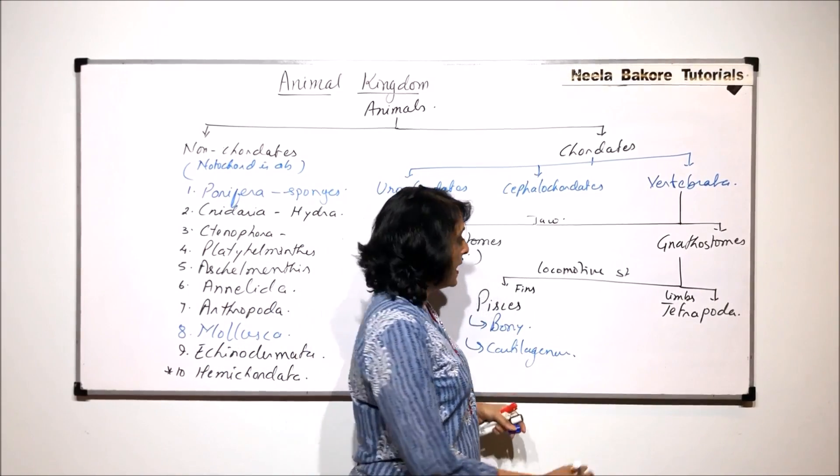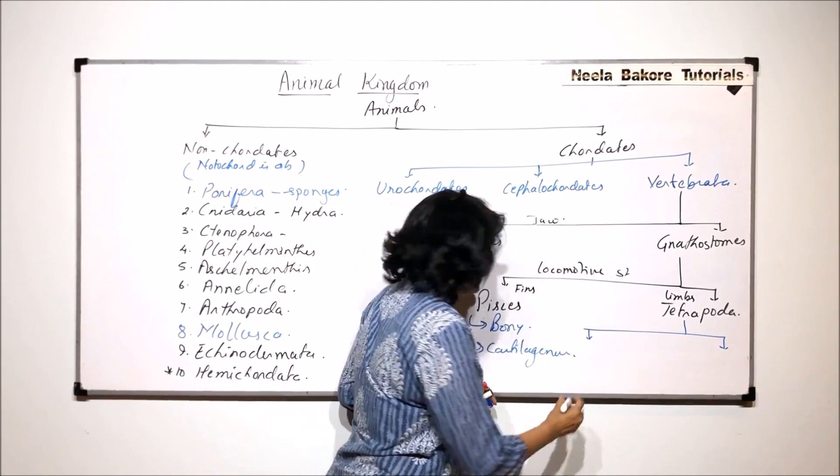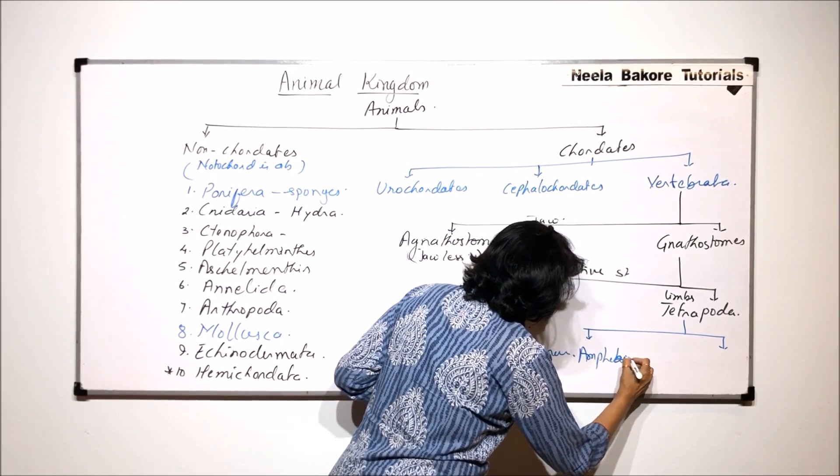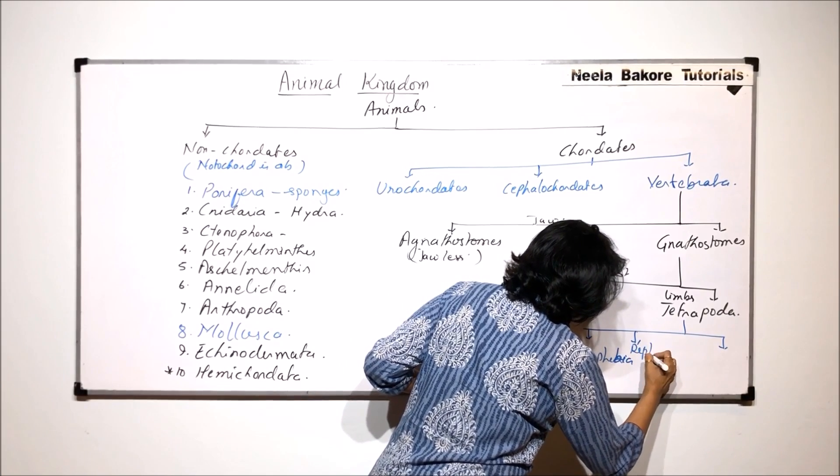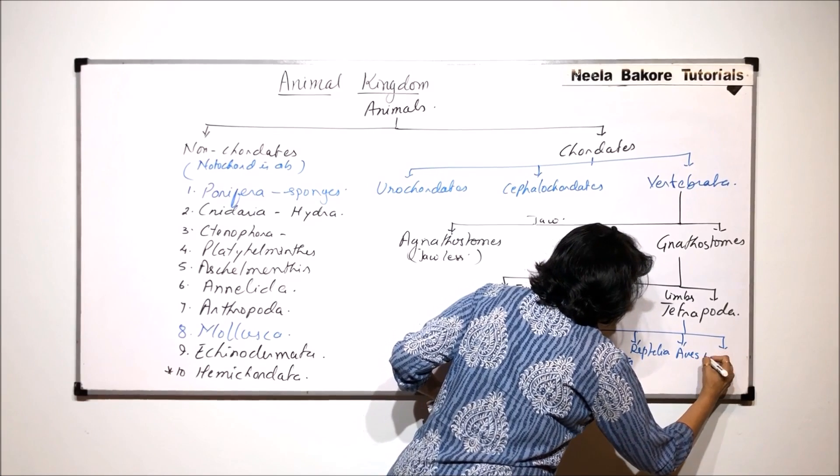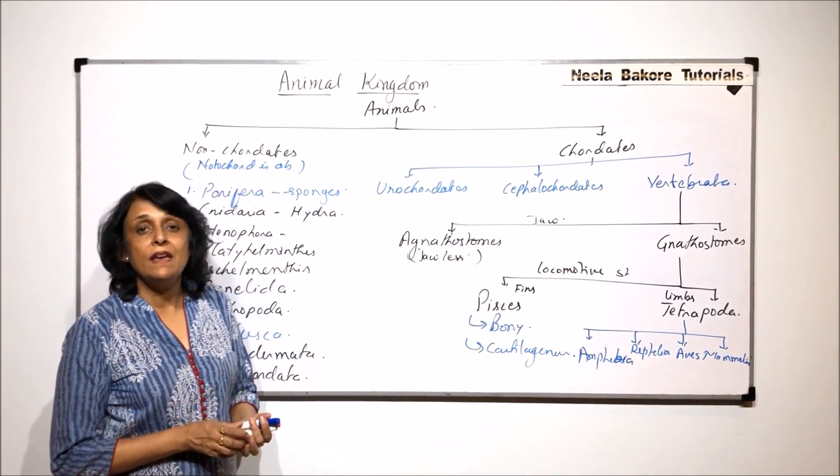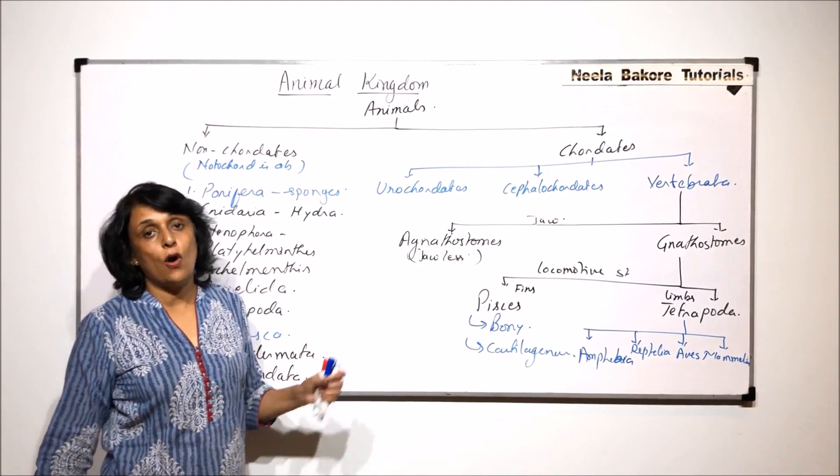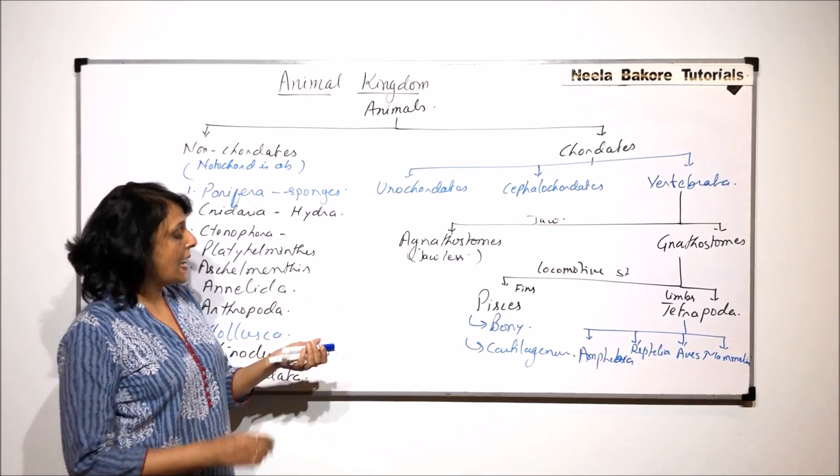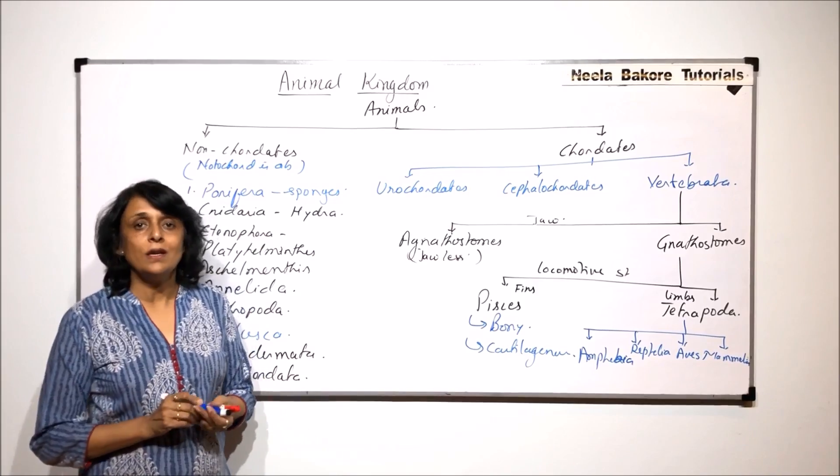And tetrapoda is classified into four categories. That is amphibia, reptilia, aves or birds, and mammalia. So this is how we have a brief, complete outline of classification of animal kingdom. And we have to talk about all these groups and also understand the criteria which was used for classification.